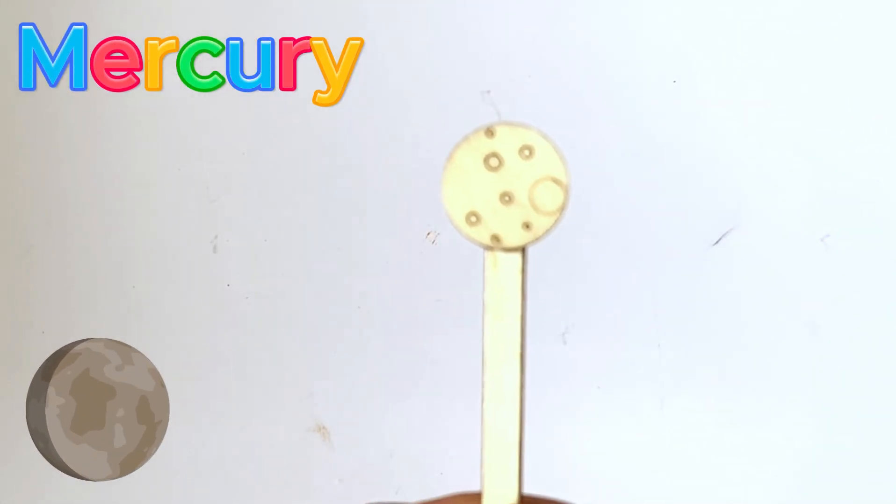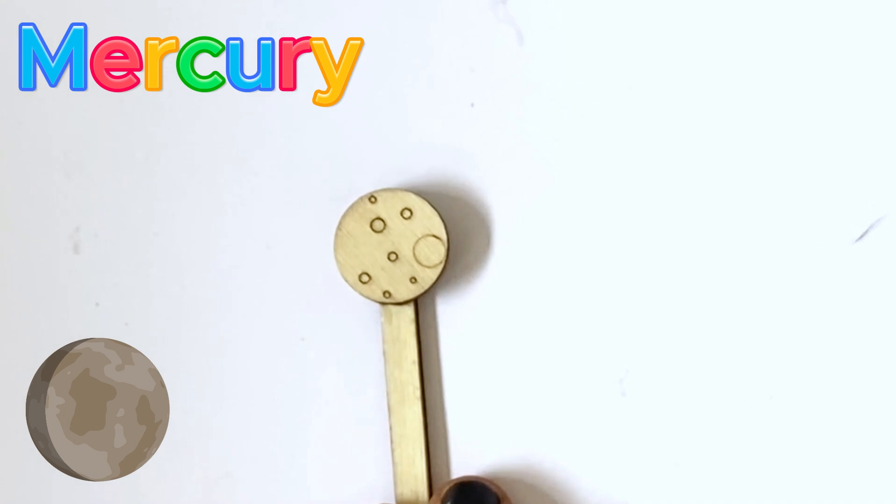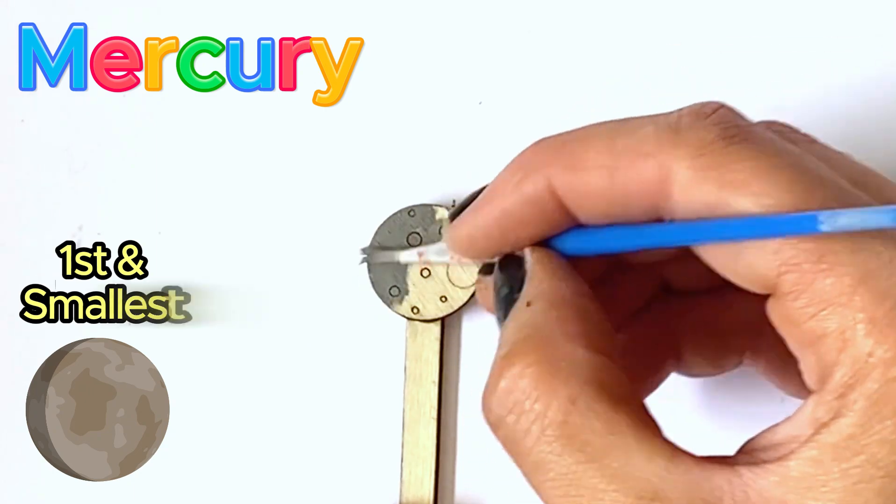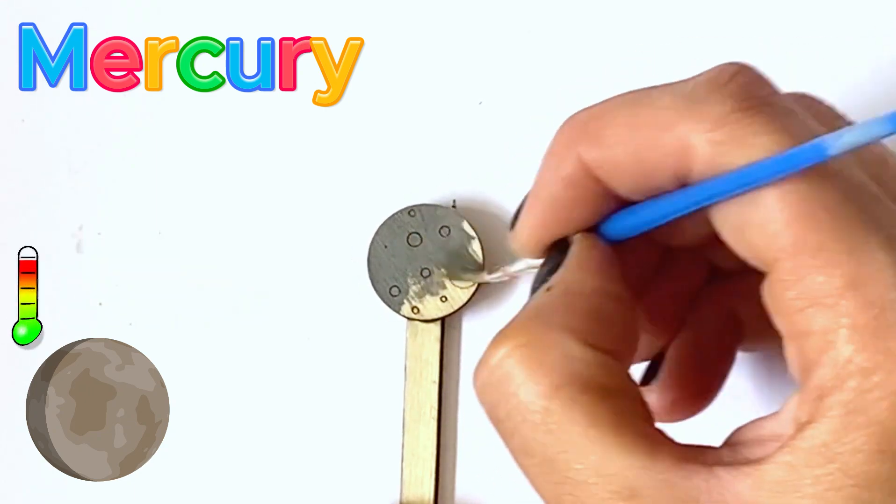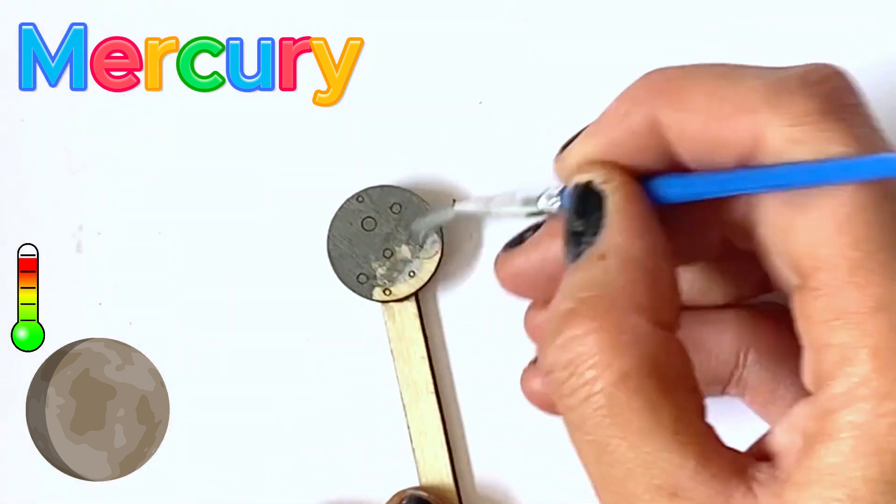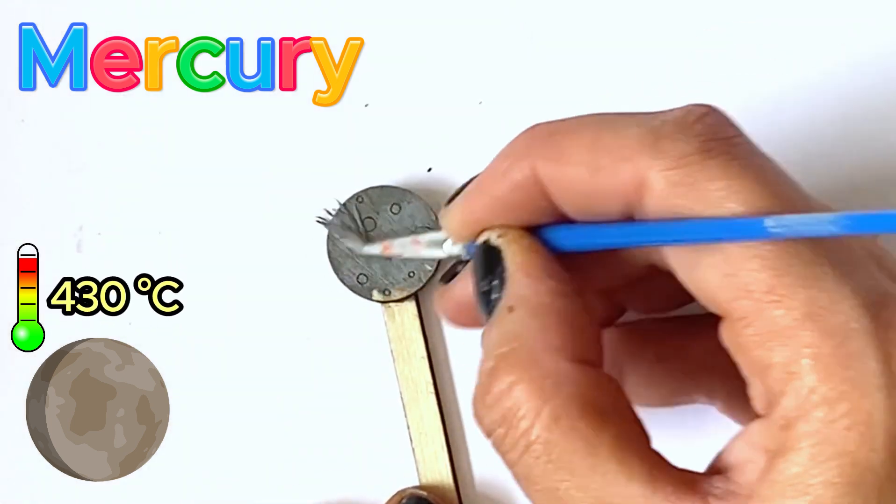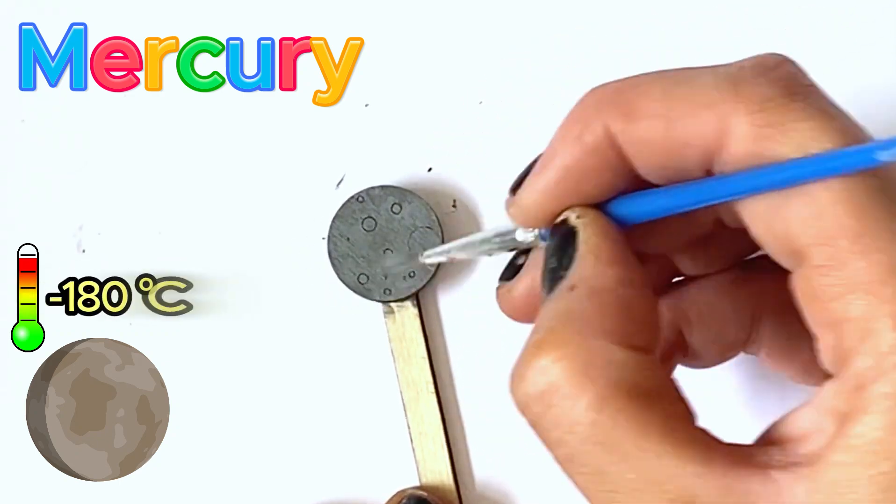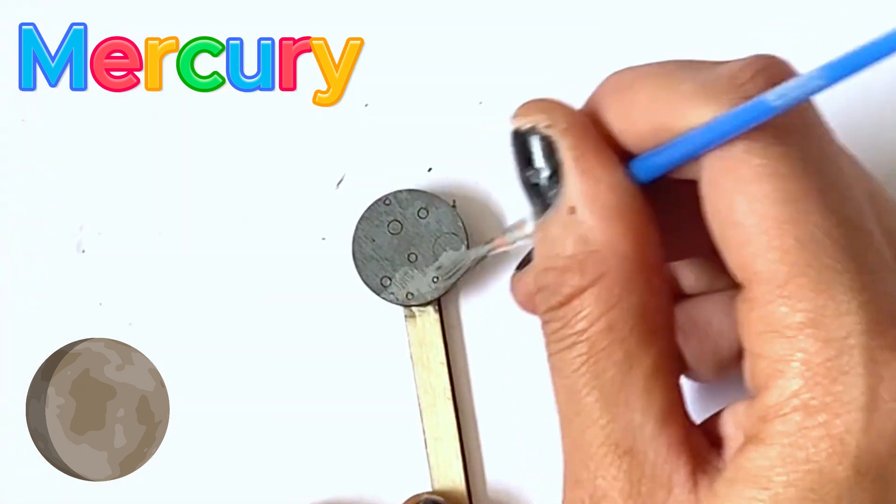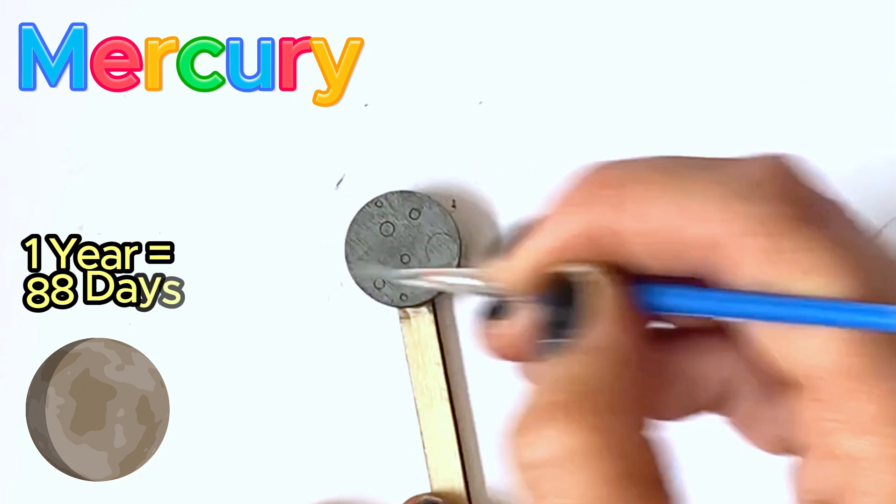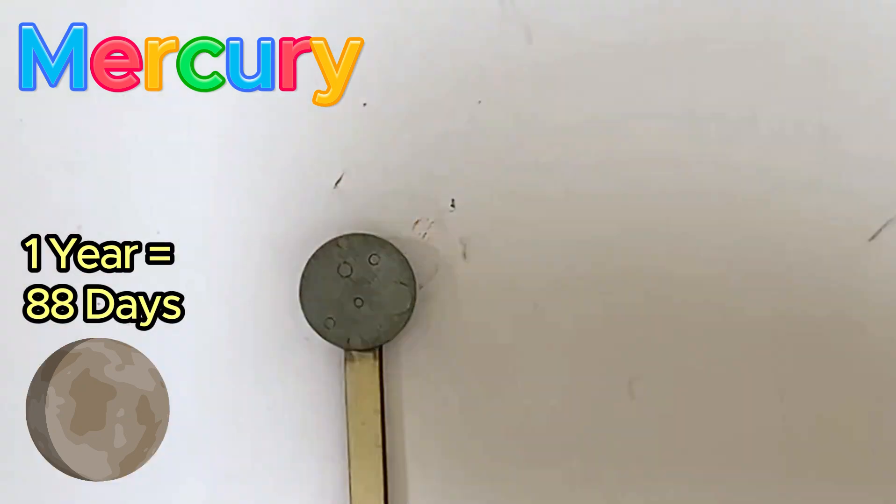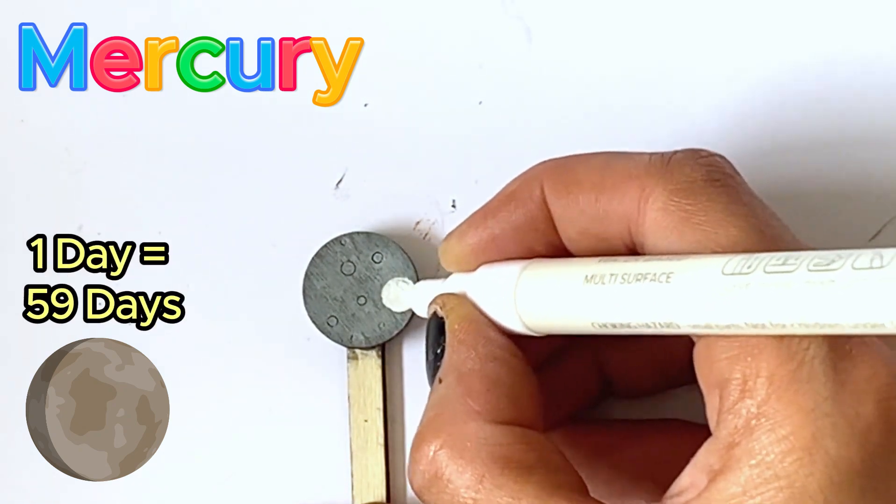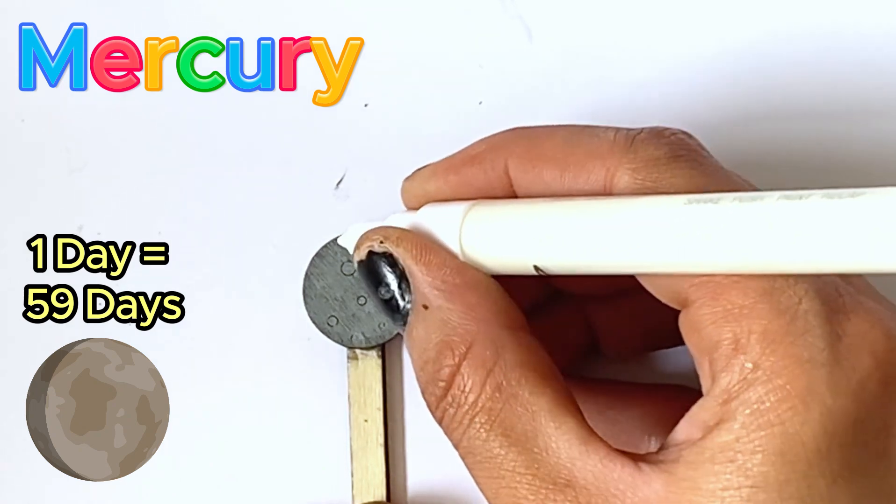So now we're going to paint our first planet, which is Mercury. Mercury is the first planet and the smallest planet of our solar system. The temperature on Mercury's surface can range dramatically from a scorching 430 Celsius during the day to a freezing minus 180 Celsius at night time, due to its lack of atmosphere to retain heat. Mercury takes 88 days to orbit the Sun, as it is the closest.